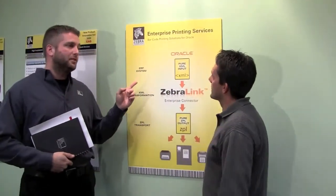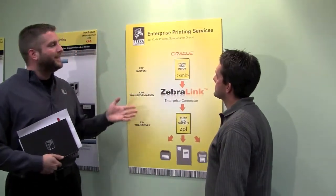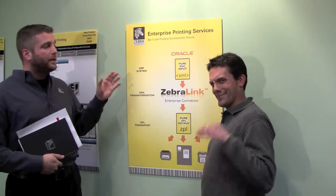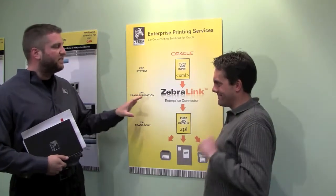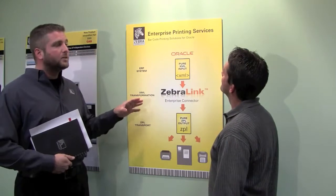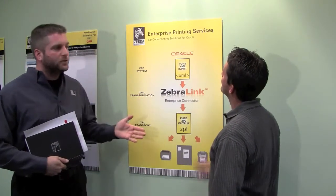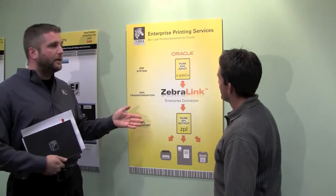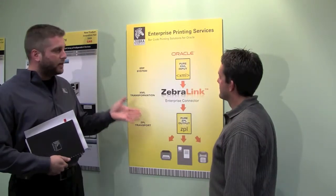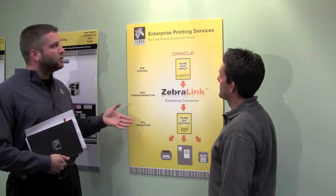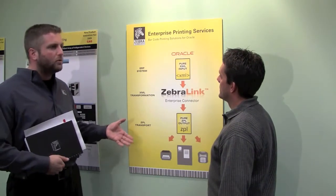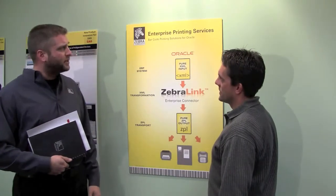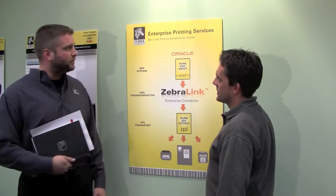We also have Enterprise Printing Services, which will do a needs assessment of your customer's ERP system. They can discuss the implementation and configuration of Enterprise Connector, as well as any training or support your customer might need. They'll manage the label design if needed, take care of any documentation, and go so far as to create hardware or software customizations. That should help your customer along towards this solution.